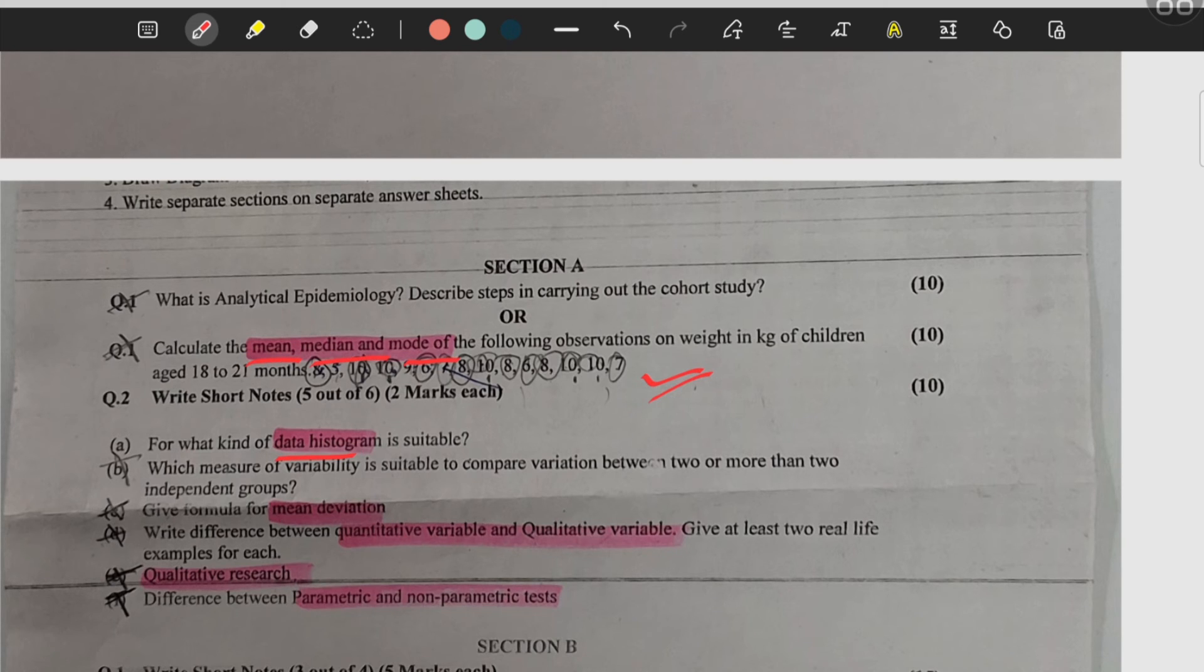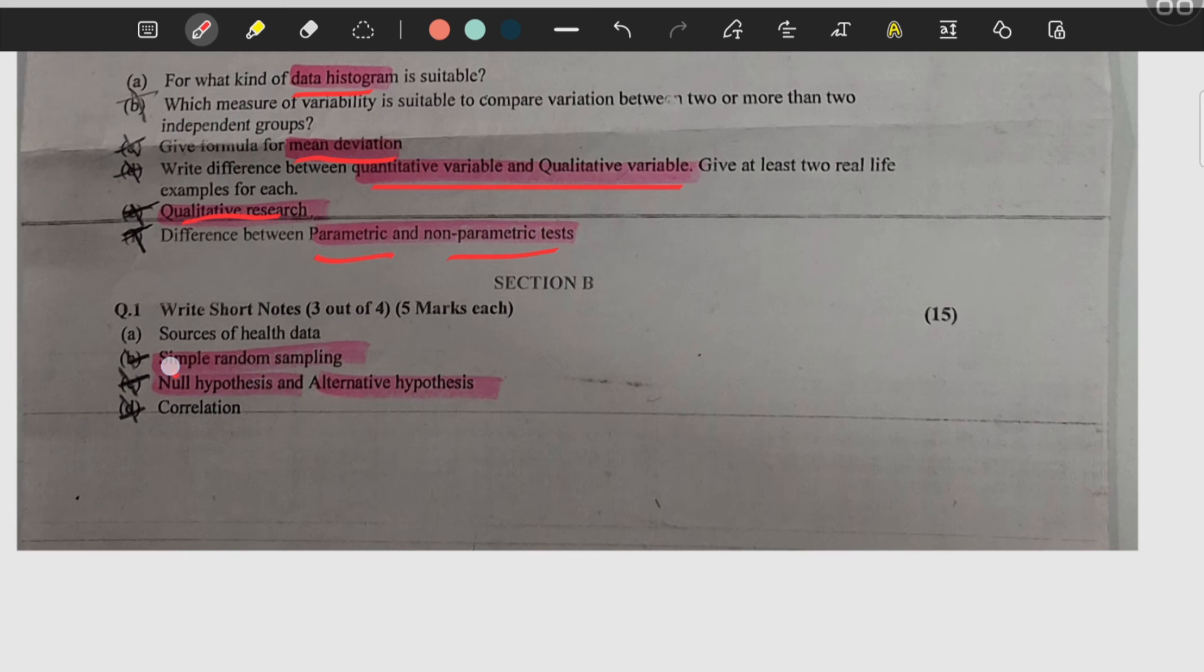Then what is data histogram, what is formula of mean deviation, quantitative variable and qualitative variable difference, what is qualitative research, what is parametric and non-parametric test, what is simple random sampling, what is null hypothesis and alternative hypothesis.